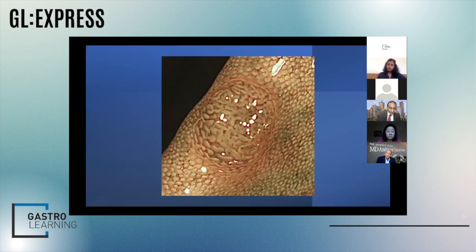On this example, this is a diminutive polyp. Using the NICE classification, it's a type II lesion. You've got white structures — the pits — and you can see they're regular, with nice brown vessels surrounding them. There isn't an area of disruption; there's nothing worrying about this polyp. So this is an adenoma.